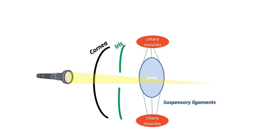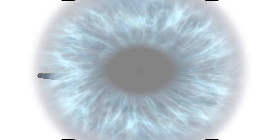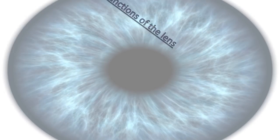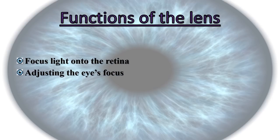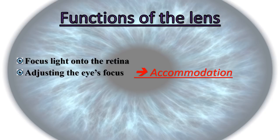The lens has two important tasks. First, just as the cornea, the lens focuses light onto the retina. At the retina, light is changed into nerve signals that are sent to the brain. Second, the lens adjusts the eye's focus, allowing us to see things clearly both up close and far away. This is done by a process called accommodation.